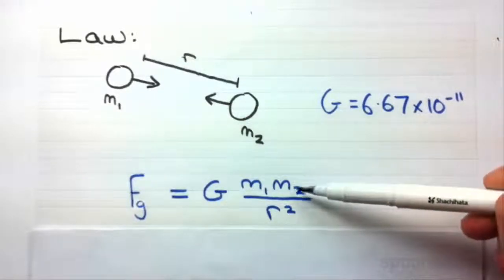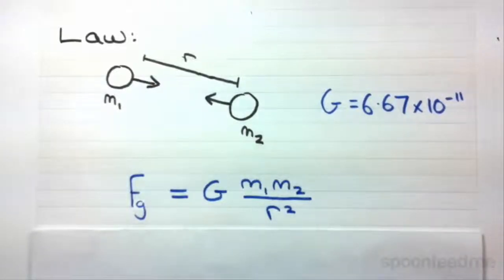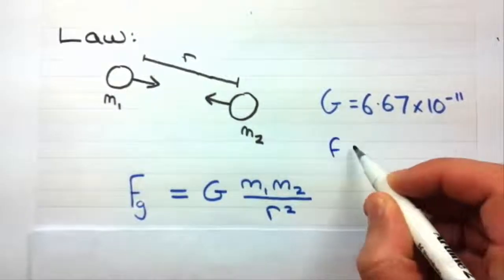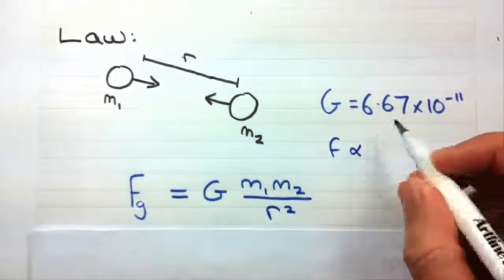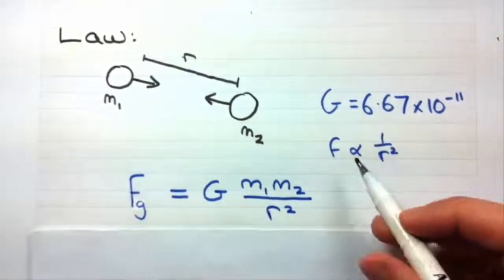It's also, the greater the masses, the greater this gravitational force. And I guess the way you can write that is f is inversely proportional to 1 on r squared. So as 1 on r squared gets bigger, f gets smaller.